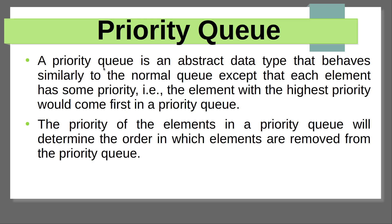The priority queue is an abstract data type that behaves similarly to the normal queue. It behaves like a normal queue, except each element has some priority. The element with the highest priority would come first in a priority queue. The priority element in the priority queue will determine the order in which elements are removed from the priority queue.